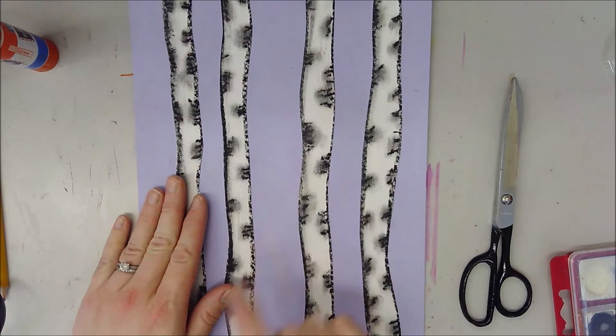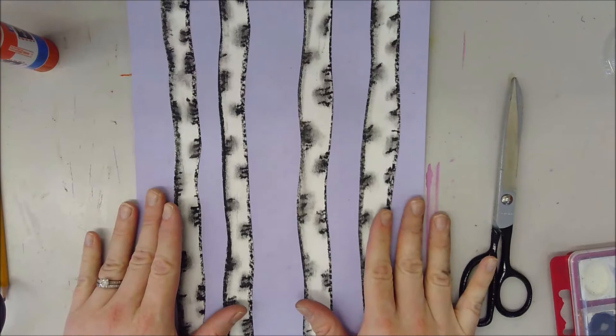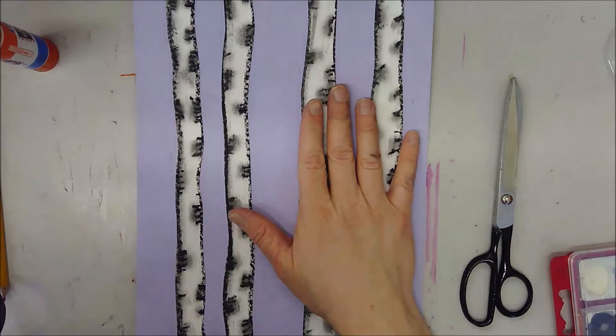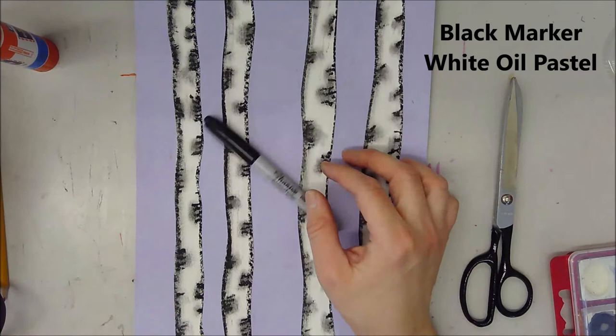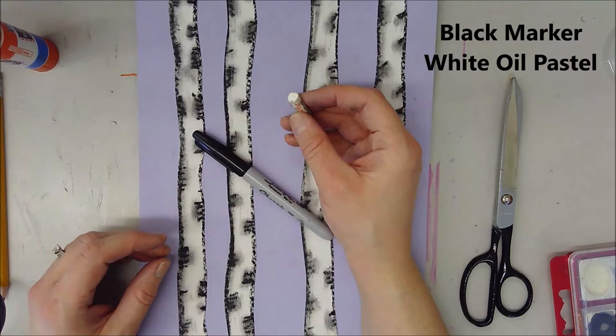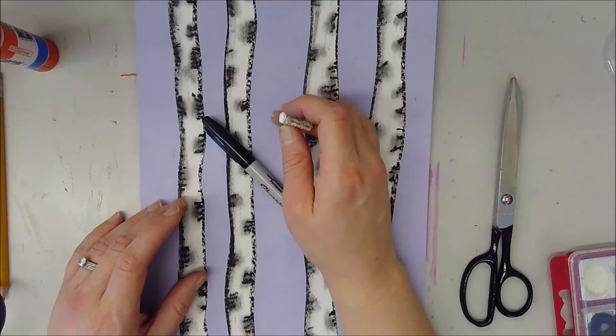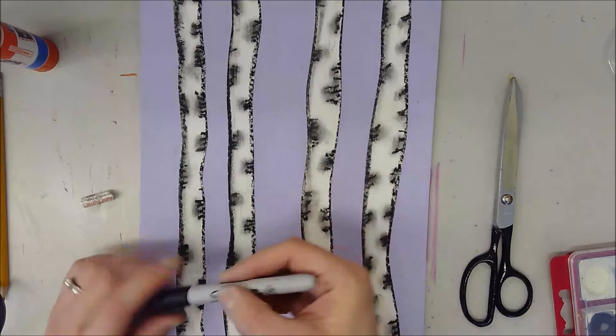So we have our trees glued down to our background. You can see I tried to think about where I was going to be spacing them, how far apart they were going to go and I settled on this sort of situation. Now to finish our background before we get ready for our birds we are going to be needing a black sharpie or any other black marker, any black marker or crayon or anything like that will work just great and you're going to want a white oil pastel. If you don't have a white oil pastel try white crayon. It might not show up very well if it's a colored background but you could also try paint or any number of other things.